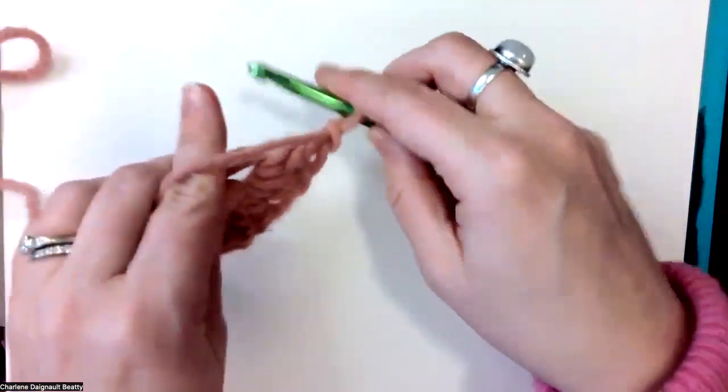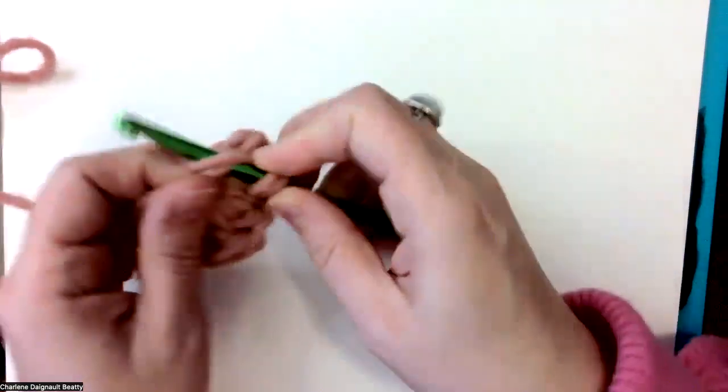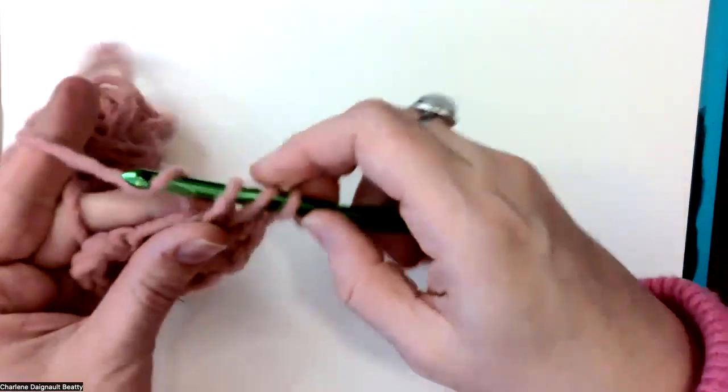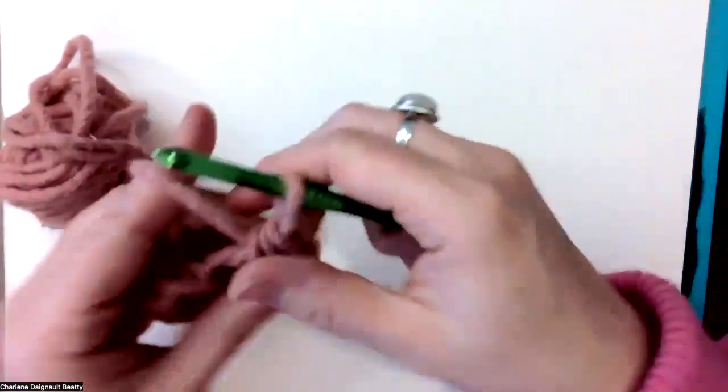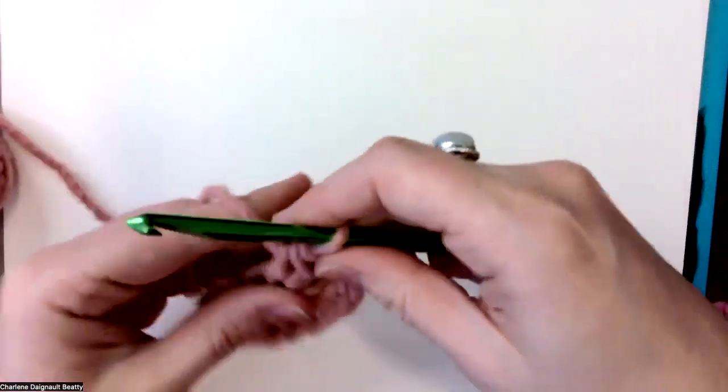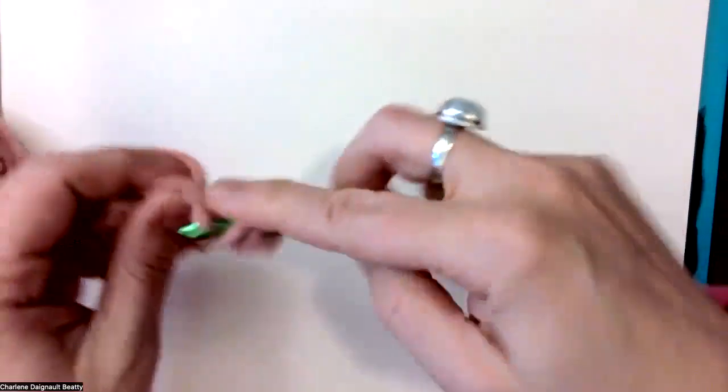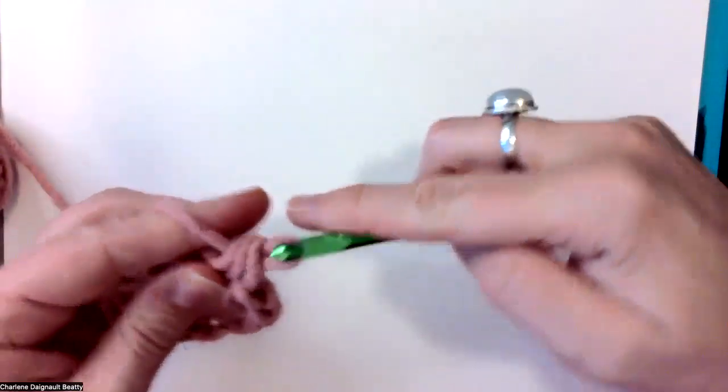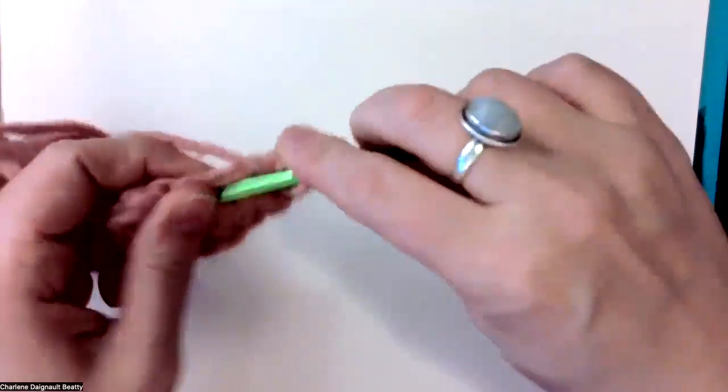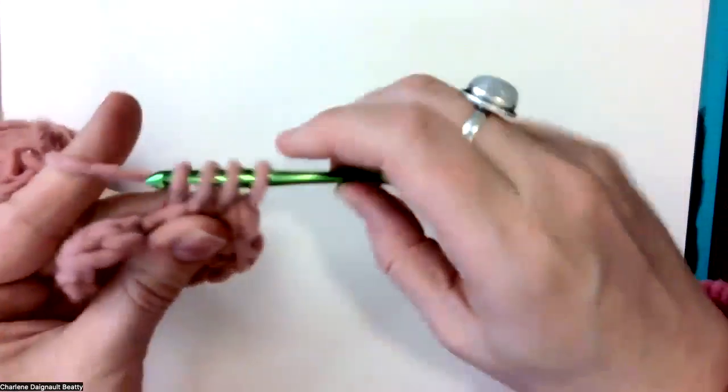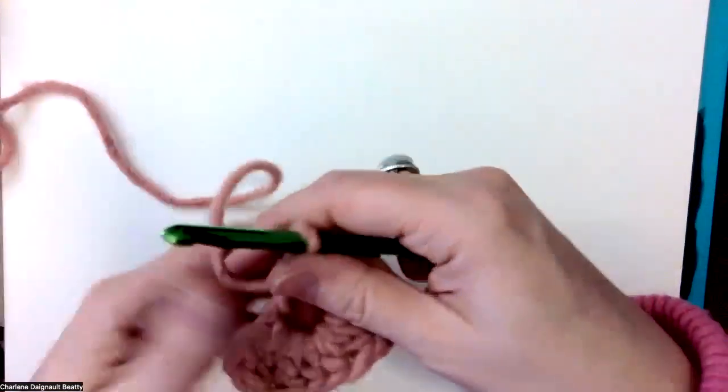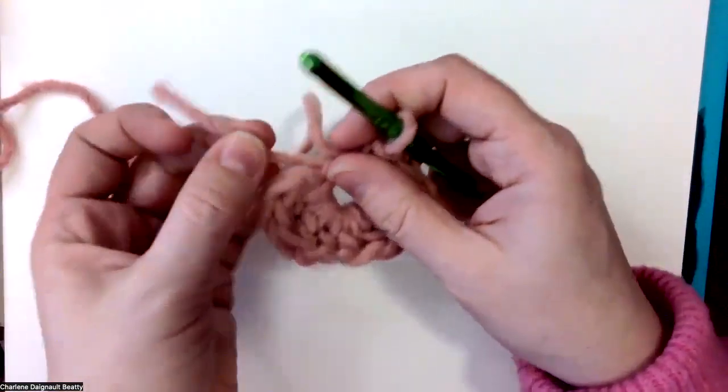Don't lose that tail. Then I'm going to chain one. Then I'm going to do three half double crochets. One, two, three.